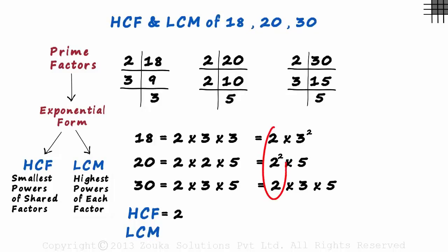First, let's look at 2. 2 squared is the highest power amongst these three, so we write 2 squared first. Among 3 and 3 squared, 3 squared is higher. We multiply this with 3 squared. Notice that 3 is not present in here. It doesn't matter. For the LCM, we consider the highest power of each factor, whether it is shared or not.